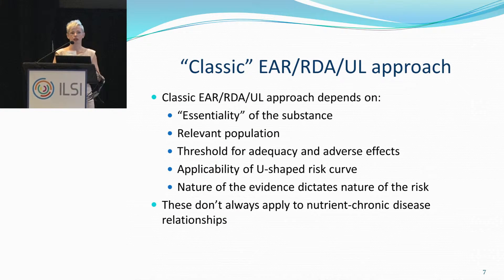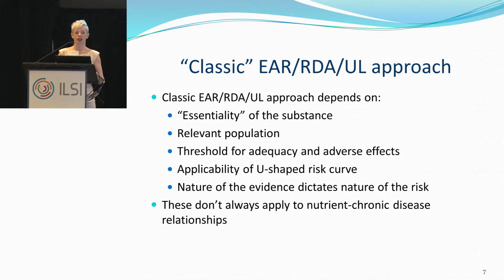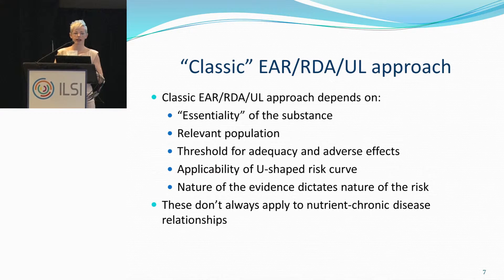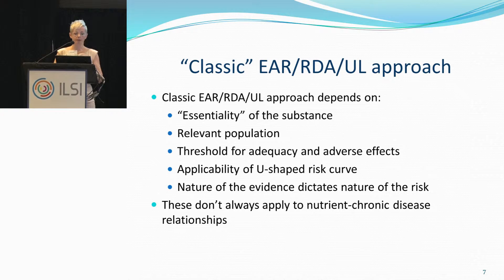Here are some assumptions and data requirements set in the classic framework. The approach depends on the essentiality of the substance — it was looking at essential nutrients. Relevant populations were known. There was an assumption of a threshold for adequacy and a threshold for upper tolerable intake levels, along with assumptions about the U-shaped risk curve. The nature of the evidence used for setting those values for adequacy and upper tolerable levels is very different from the data available when looking at chronic disease endpoints. Because these assumptions don't always apply to chronic disease endpoints, this is why it became very difficult.